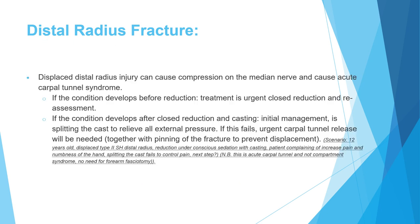Similar to adult distal radius fractures, it can cause acute compression of the median nerve resulting in acute carpal tunnel syndrome. If this happens before reduction — patient presents with a displaced fracture and acute carpal tunnel — the treatment is closed reduction and reassessment. If this happens after closed reduction, the treatment is first splitting all the casting material. If this fails to control symptoms, an acute carpal tunnel release should be done with pinning of the fracture. Note that this is not compartment syndrome — it is direct compression on the nerve, so no fasciotomy is needed.